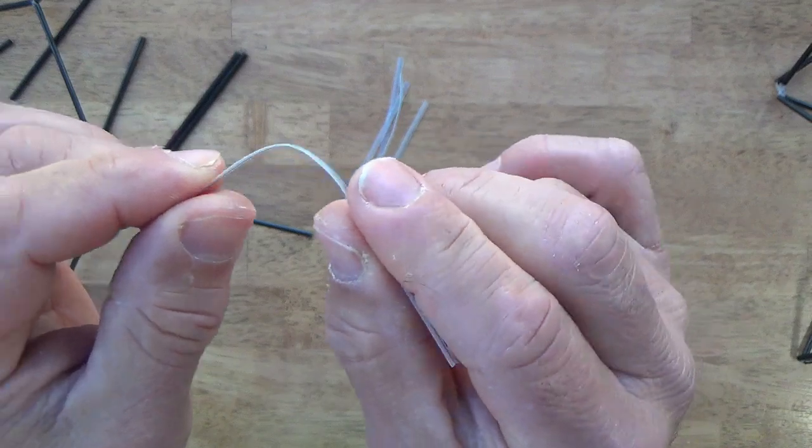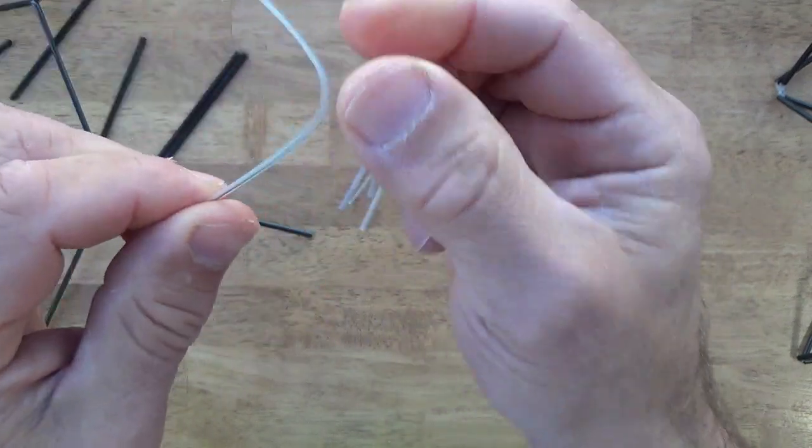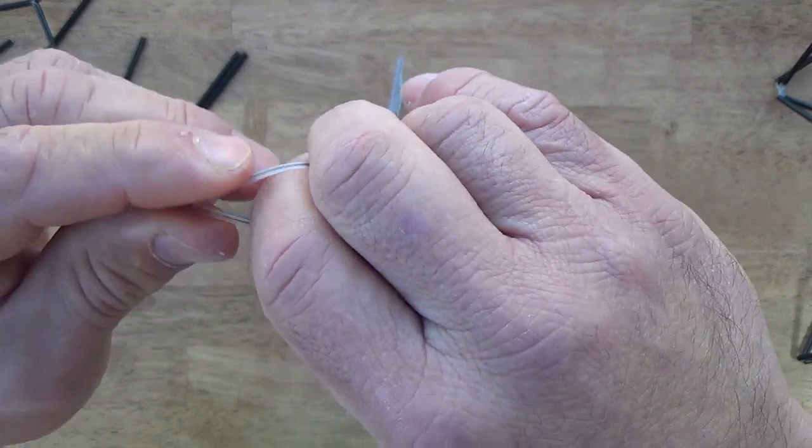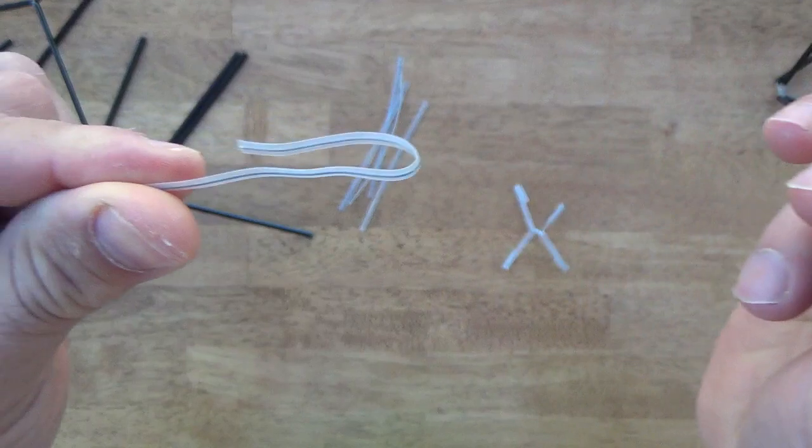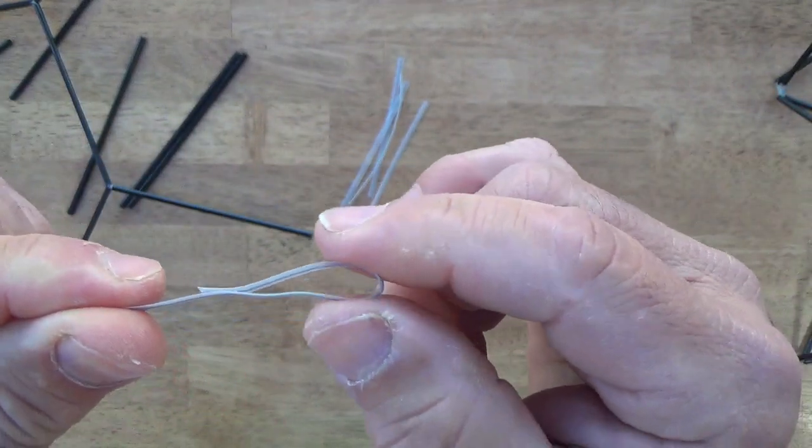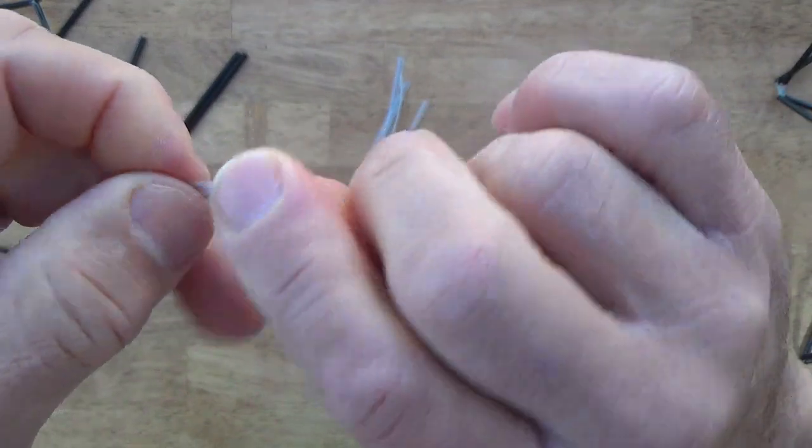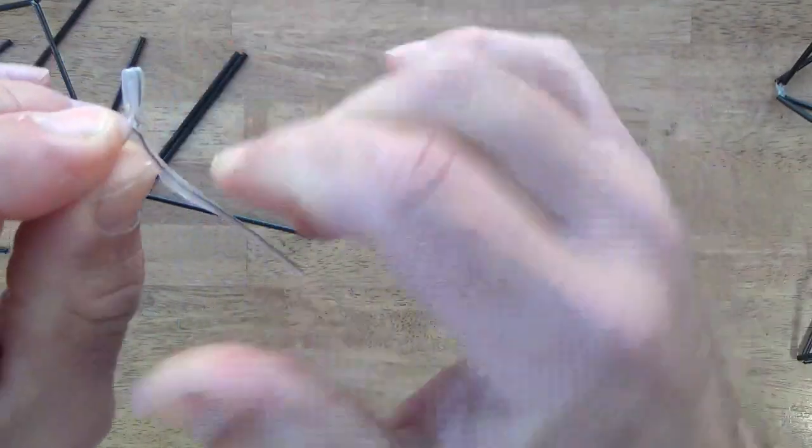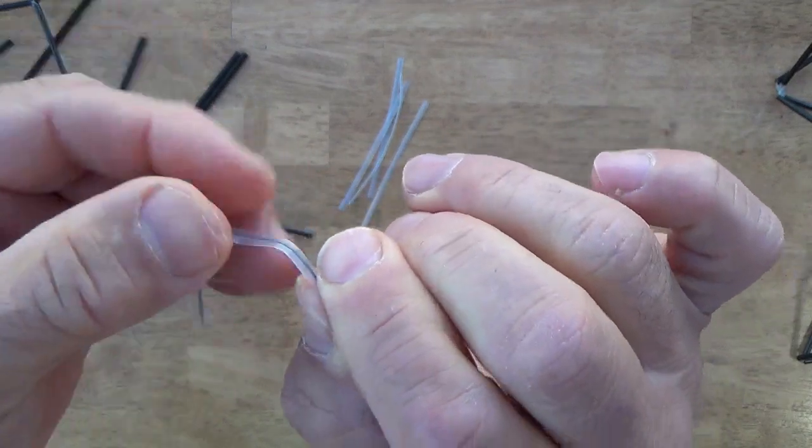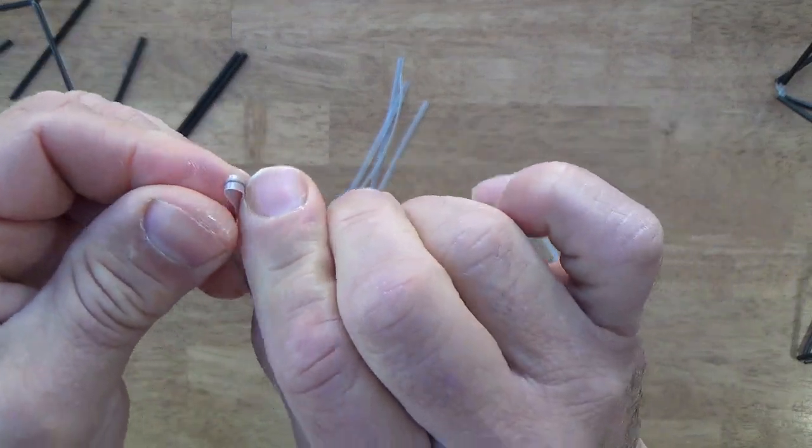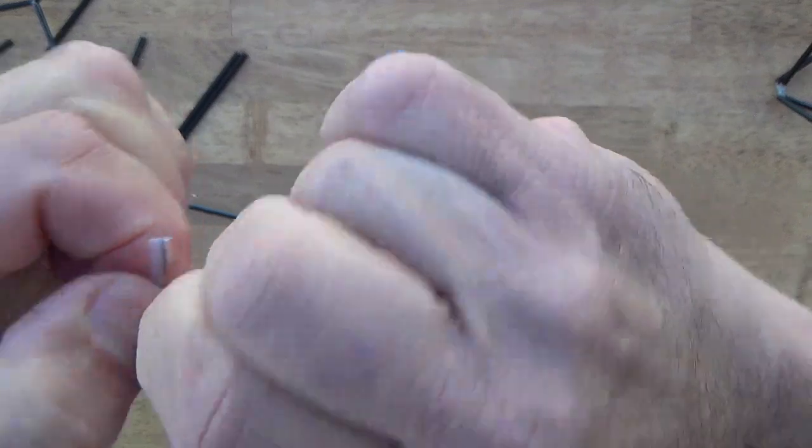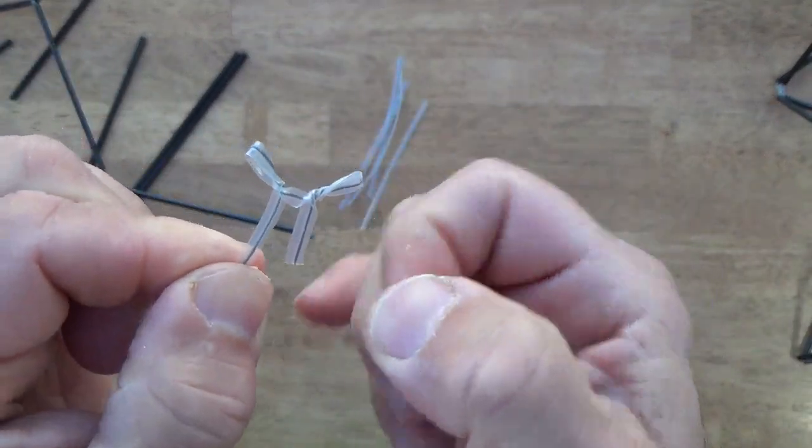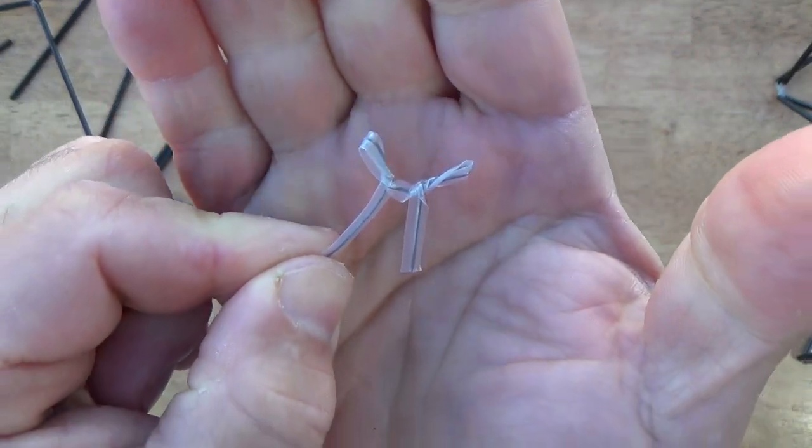If the twist ties are long enough, you could do this as well. Instead of doubling over it halfway, maybe about two-fifths of the way. So like this, bend it over, put a couple twists in there. Then take this longer one, do the same, bend it over, a couple of twists.